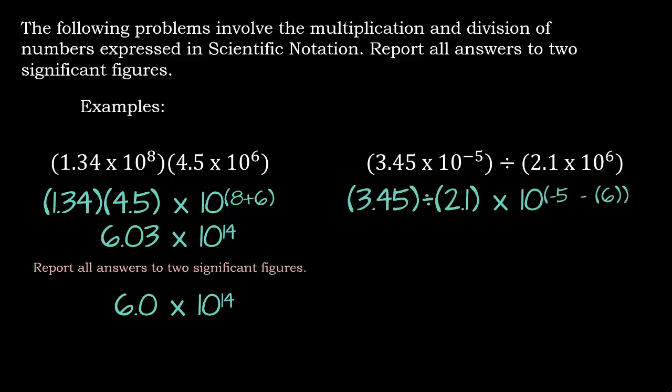Let's look at this division. It's the same as multiplication except for dividing. So we're going to take 3.45 divided by 2.1. And then for our exponents, we're going to be subtracting. So that's why I have negative 5 minus 6. When I divide, I end up with 1.643 times 10 to the negative 11. Once again, we need to report all answers to two significant figures. So I have to round. And it turns out our answer is 1.6 times 10 to the negative 11.